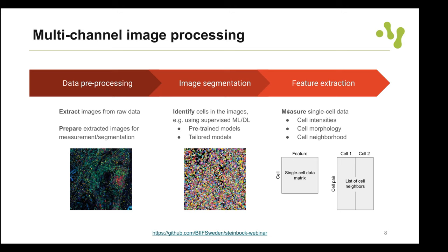The AnnData export command is slightly more complex: we export as AnnData specifying we want intensities from the intensities folder, additionally include regionprops as extra data, and include the neighbors from the neighbors folder — all to cells.h5ad. This generates one AnnData object, giving a warning that all data will be loaded into memory, which is necessary for constructing this object.